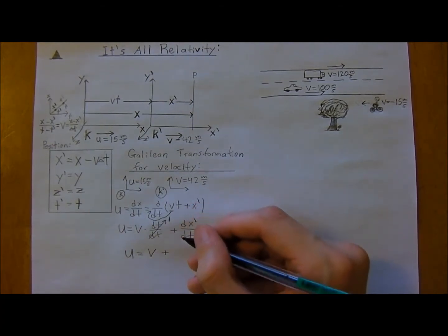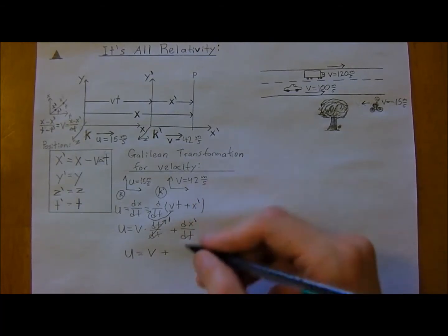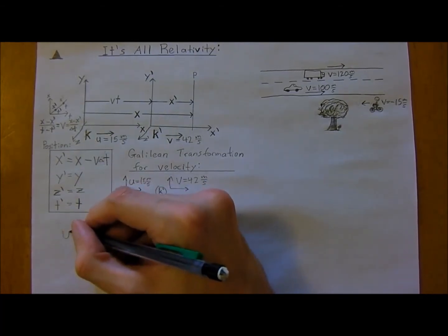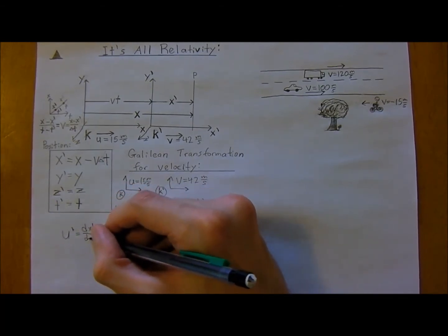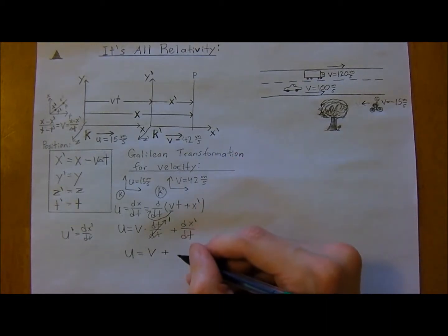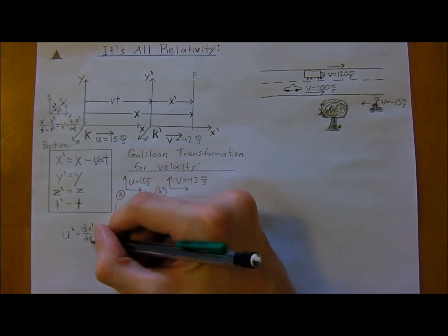And this is actually the trick here. So u-naught is just change in x-naught over change in time, so that means that this is equal to u-naught.